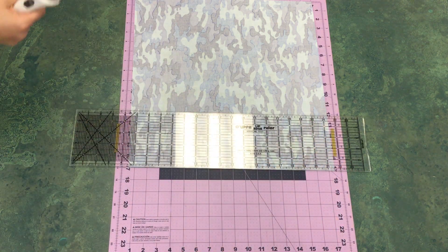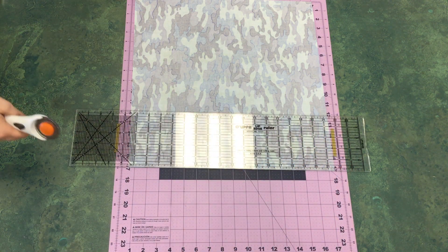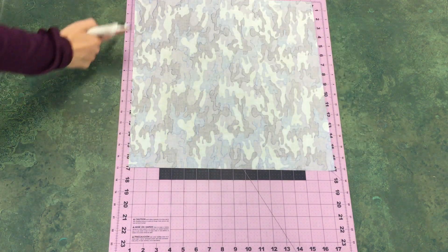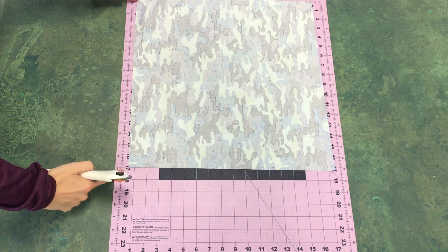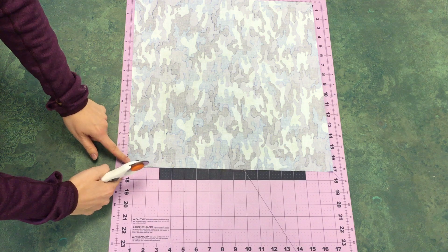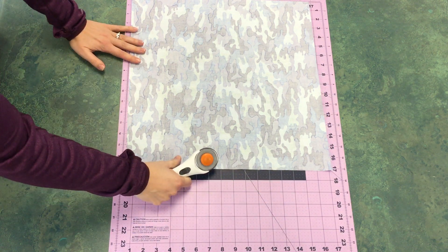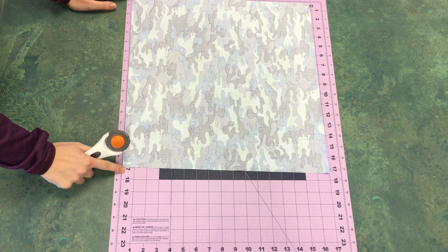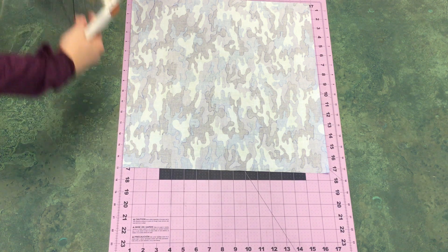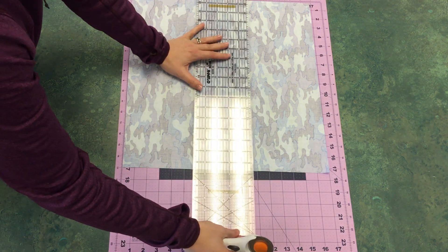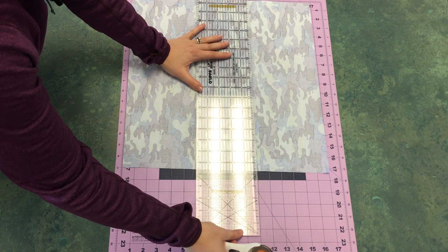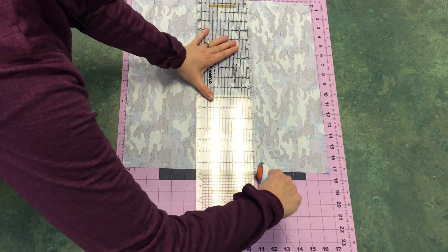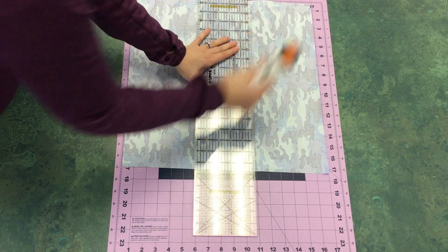My extra fabric, I'm just going to set aside. We're not going to need it anymore for right now. So I have my 17 width. I need to have my 11 length from here. So again, I'm going to move this over to line it up on the zero line, and then from there I can use the marks on the mat to cut 11 inches.